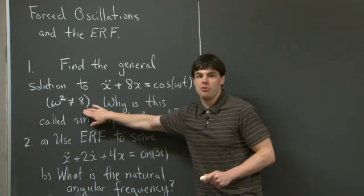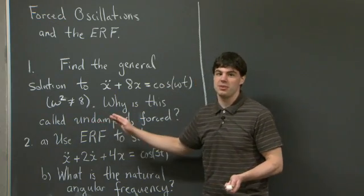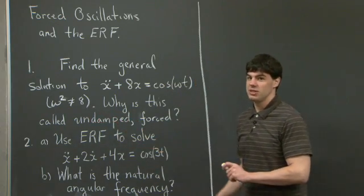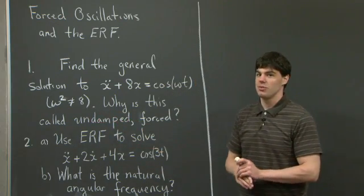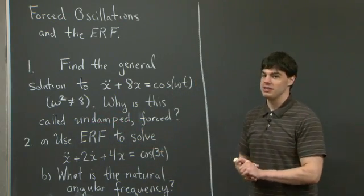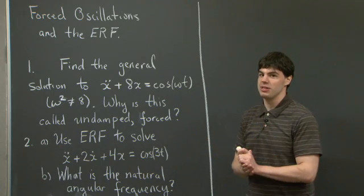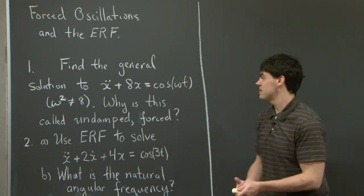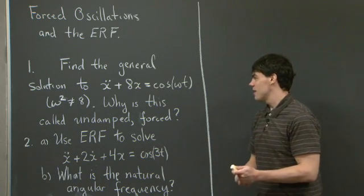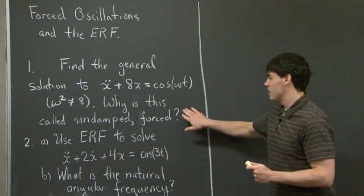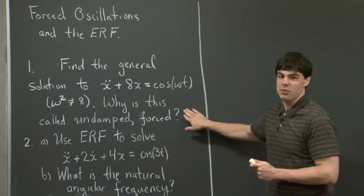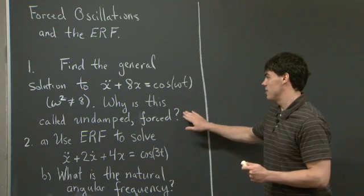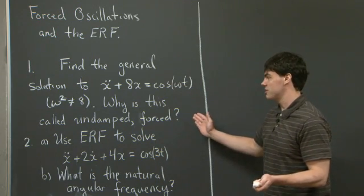We're going to consider the case when ω² is not equal to 8. So in the language of resonance, we're not on resonance. We're also asked why this is called an undamped forced oscillator.